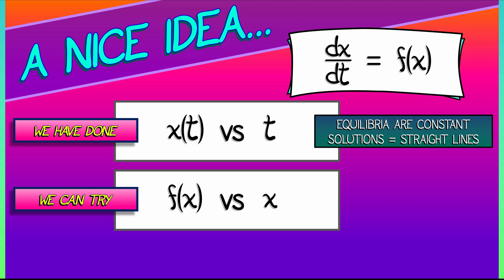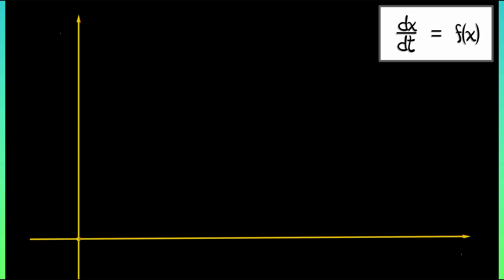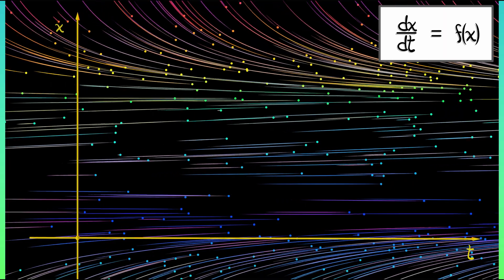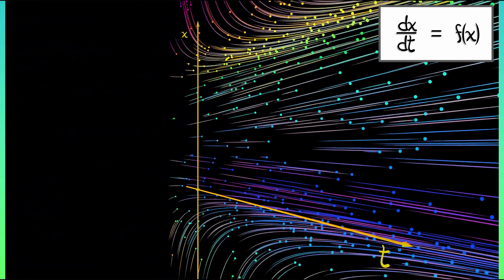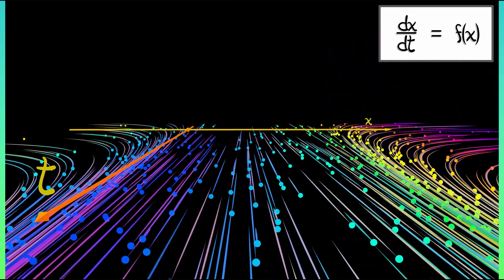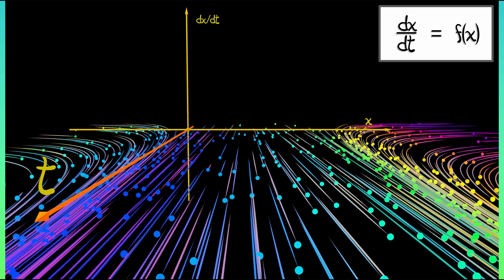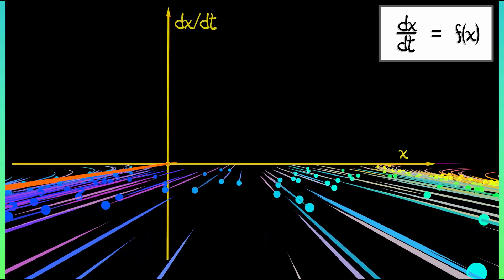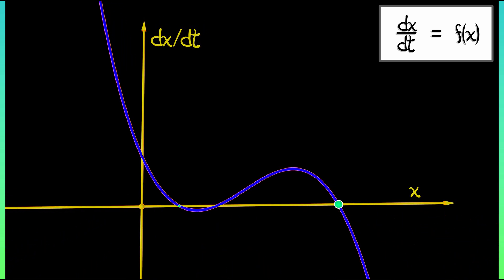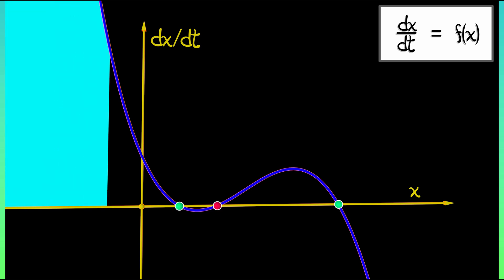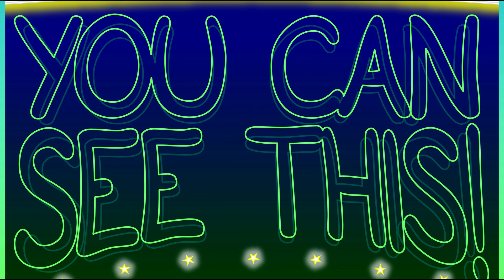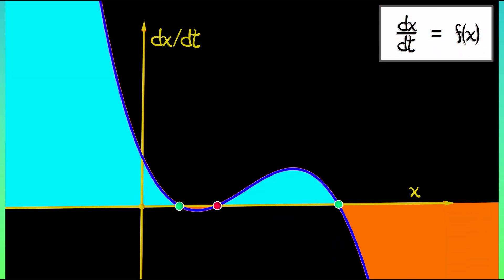Now, why would we want to do that? I kind of liked it when we drew pictures of x versus t, because I can see the solutions as a function of time. However, if we suppress that t axis, if we instead plot x along the horizontal and dx dt along the vertical, that is f, then getting rid of the t axis, we can see exactly where dx dt is going to be positive, where it's going to be negative, and where dx dt is zero. And this is really nice. In one picture, you can see what is happening, and you can see where the equilibria are.